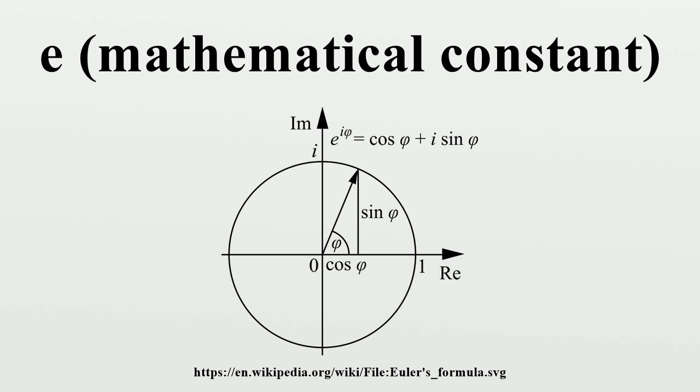He attempted to find the value of the following expression. The first known use of the constant, represented by the letter b, was in correspondence from Gottfried Leibniz to Christiaan Huygens in 1690 and 1691.